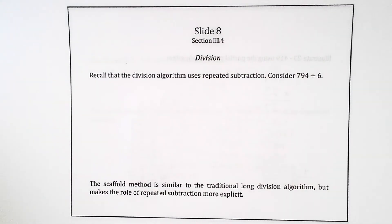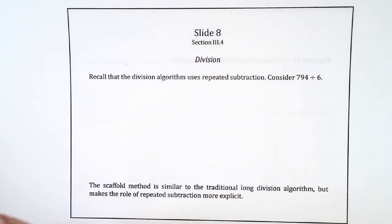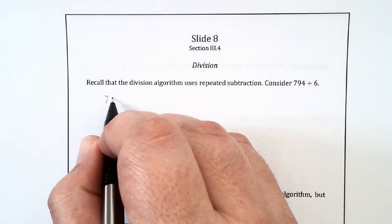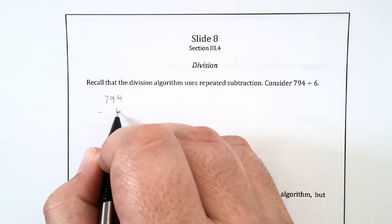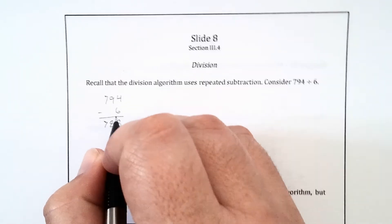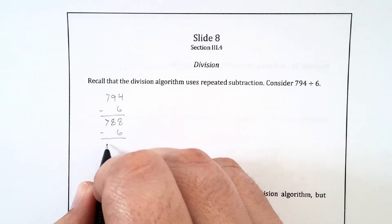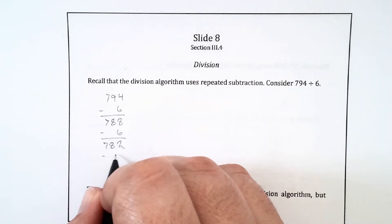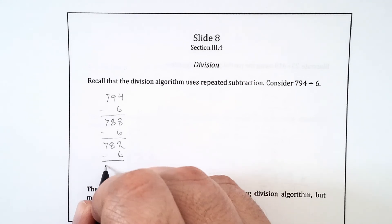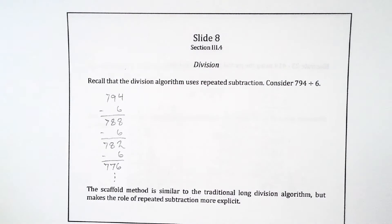Recall that the division algorithm for division of remainders uses repeated subtraction. For example, consider 794 divided by 6. One way to do this would be to just start subtracting 6 from 794. I could start with 794, subtract 6 and get 788, subtract another 6 and get 782, subtract 6 again and get 776, and so on. That's going to go on for a while though. It's going to take a while before I get down to where I can't subtract anymore.